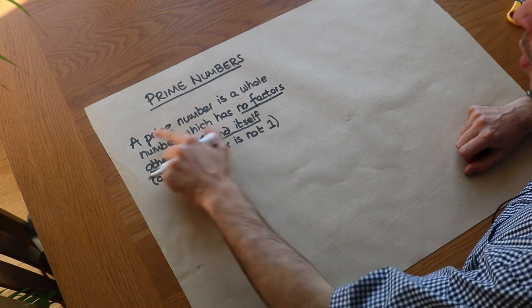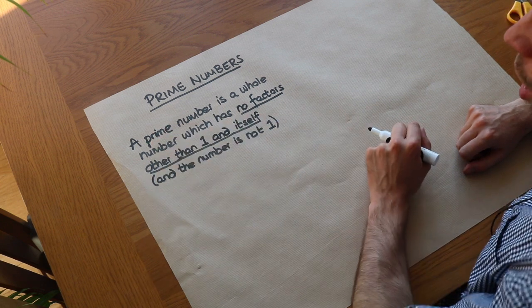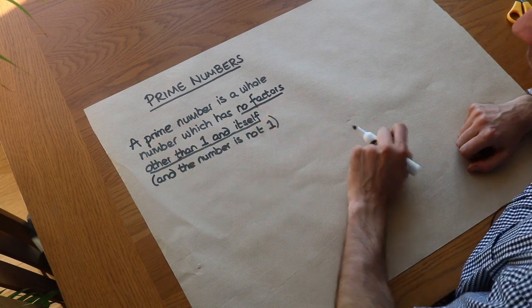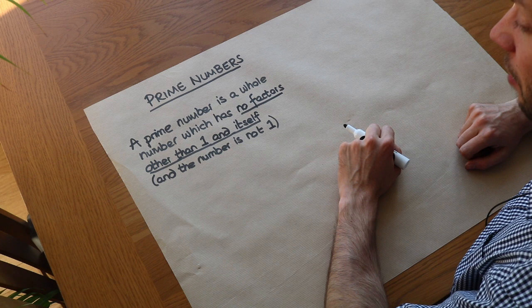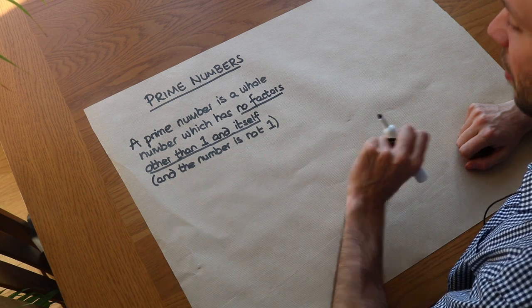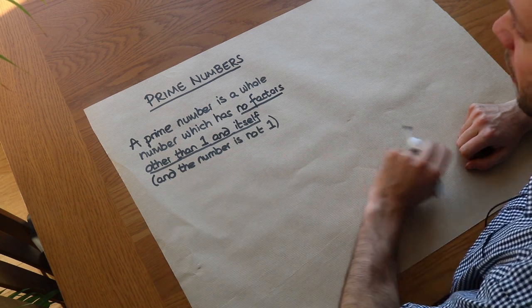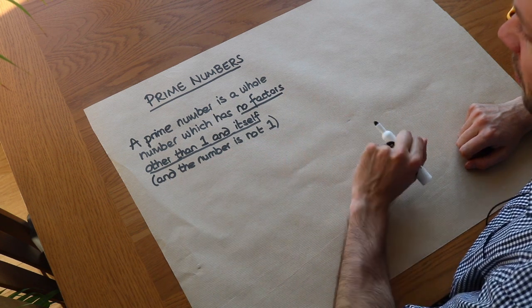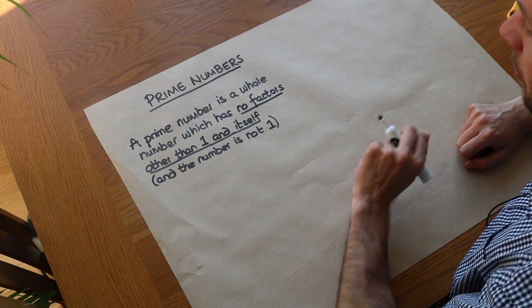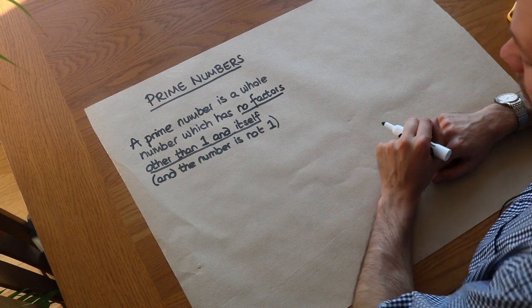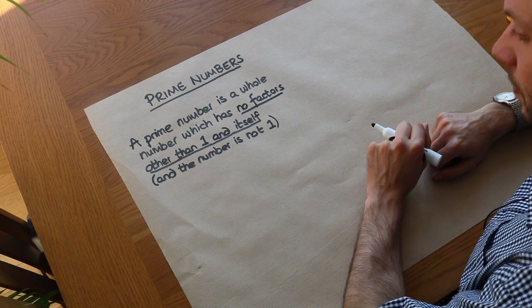A prime number is a whole number which has no factors other than one and itself. One itself is not a prime number — I won't explain why in this video, but it has something to do with the fundamental law of arithmetic.